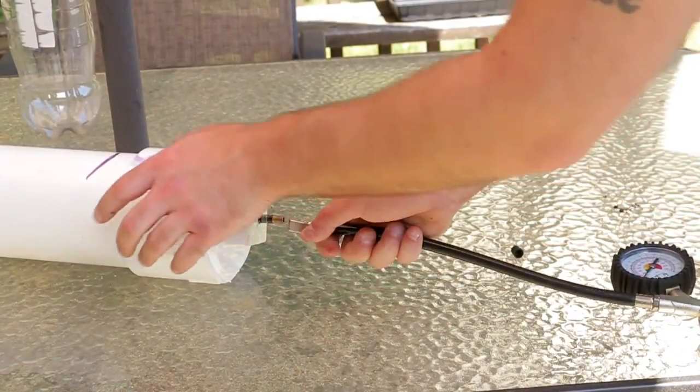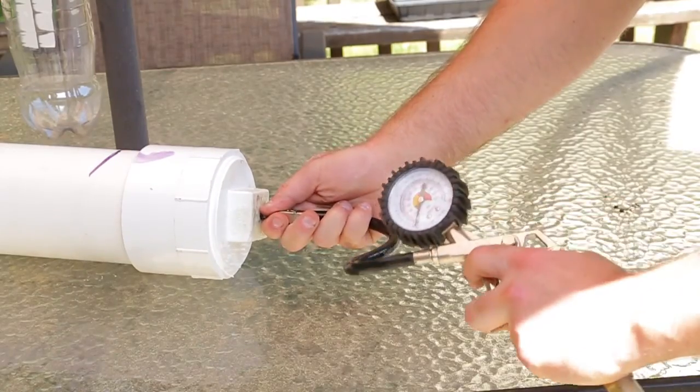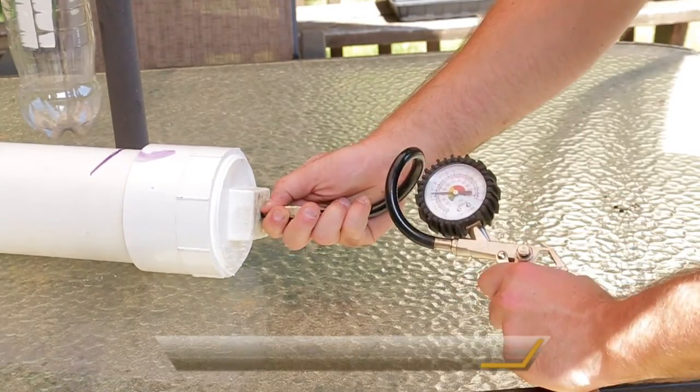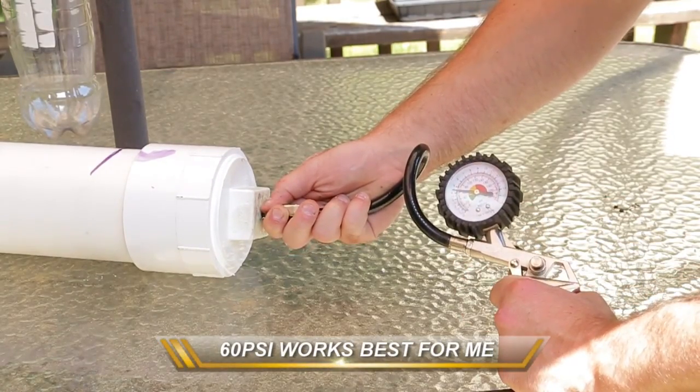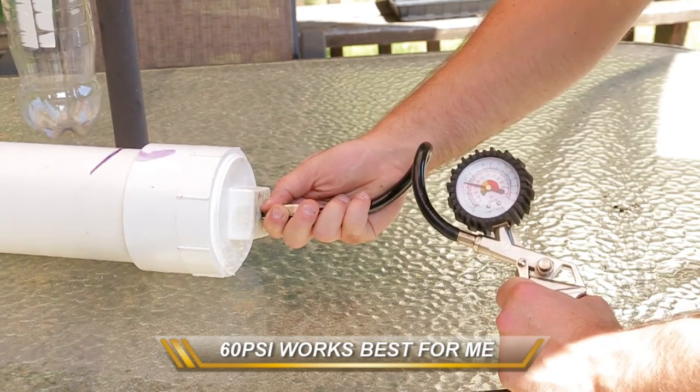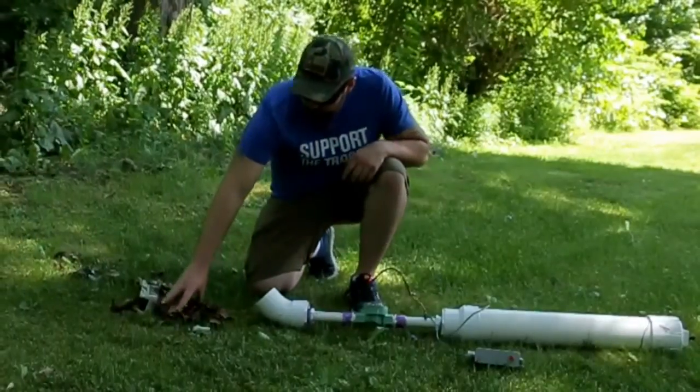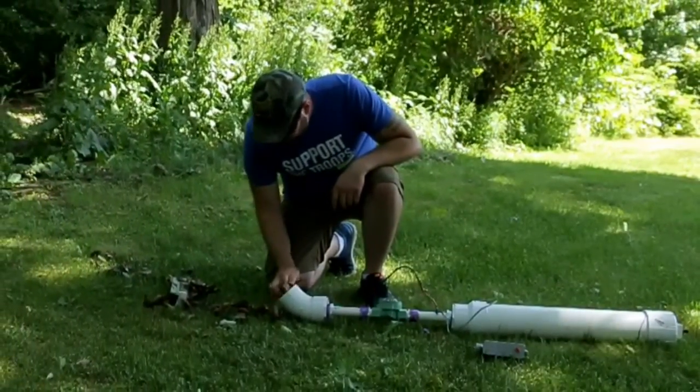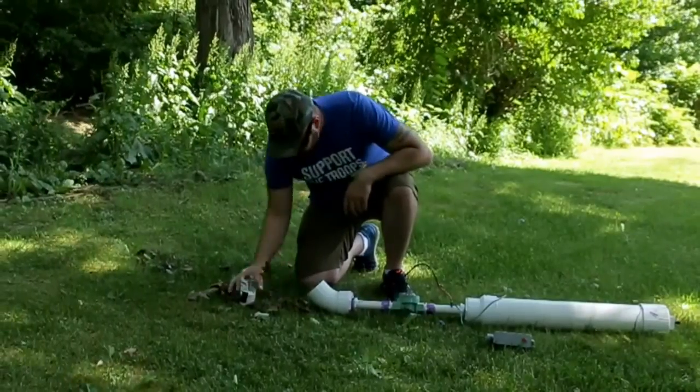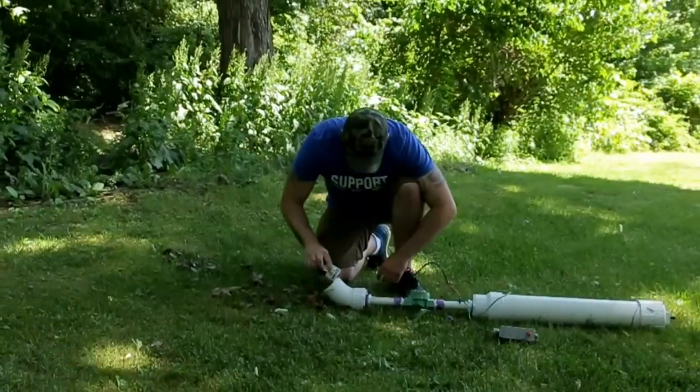Connect your air compressor or bicycle pump to the air cannon and start putting in some air. I recommend starting low around 40 psi and then working your way up as you test it. Do not exceed 75 psi as these are not rated for high pressure. For my first test, I filled the air cannon to 50 psi. I used some dead leaves and flowers as my first explosion.